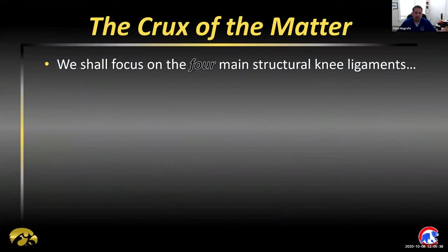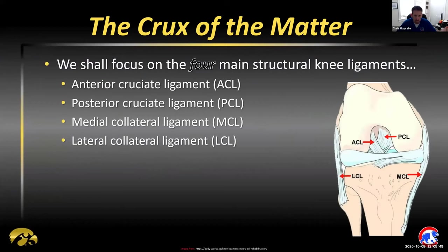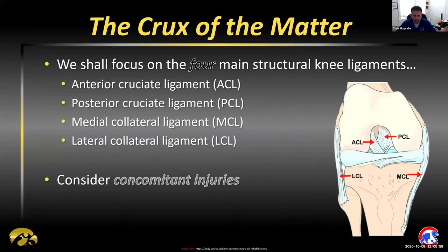Some anatomy things just to set the stage — an important foundation before we continue. We're going to highlight the four main structural components of the knee ligament-wise: ACL, PCL, MCL, and LCL. A couple of things to keep in mind: while it happens, it's relatively uncommon for these to be injured in isolation with a significant injury.